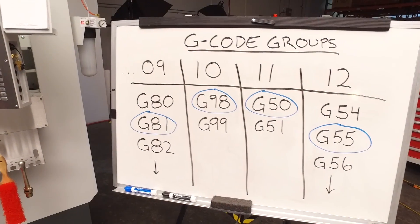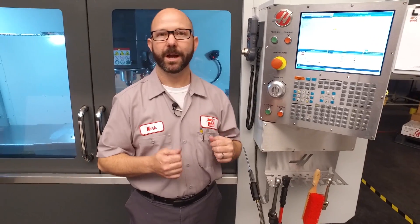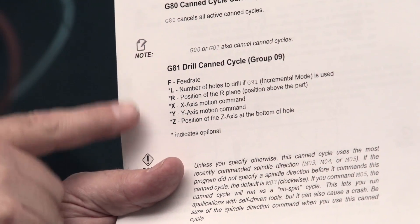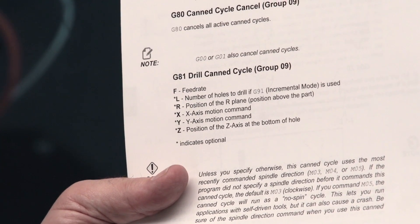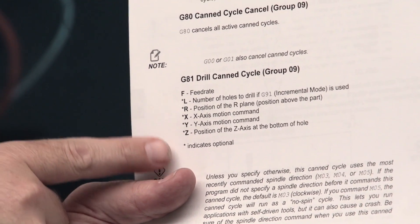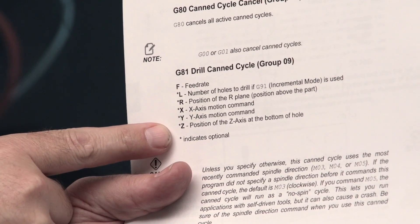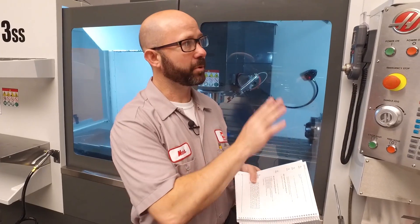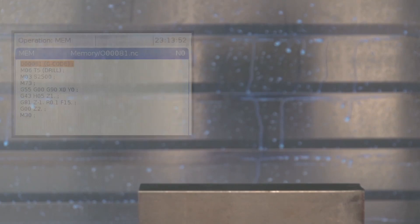Now as I wrote my G-81 drilling program, I looked up G-81 in the mill manual. Underneath G-81, it gives a list of required and optional address codes. A feed rate, a Z-depth, things like that. And I added those values to my program. That program is loaded in my machine. And I'm gonna press cycle start.